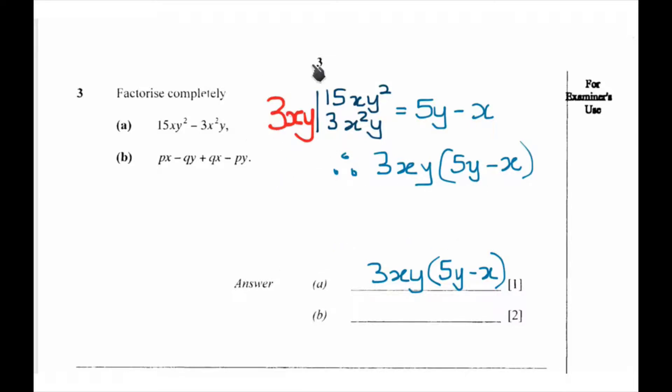Then we divide 3xy into 3x²y. 3 into 3 we get 1. x into x² means we have two x's, so we remove one and are left with x. Then y into y is 1, so we do not write anything. Our final answer will be 3xy(5y - x).